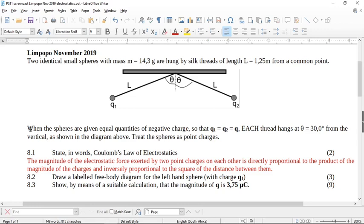When the spheres are given equal quantities of negative charge, so that Q1 equals Q2 equals Q, each thread hangs at 30 degrees from the vertical as shown in the diagram. Treat the spheres as point charges. State in words Coulomb's law of electrostatics, there we go.